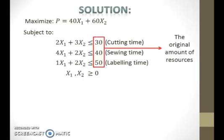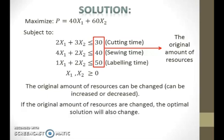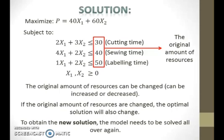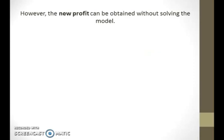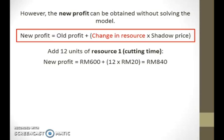Note that the right-hand side values in the model represent the original amount of resources. These values can be changed — that is, they can be increased or decreased. If these values are changed, the optimal solution will also change. To obtain the new optimal solution, the model needs to be solved all over again. However, the new profit can be obtained without solving the model. For example, by using the formula, if 12 units of resource 1 are added to the model, the new profit becomes 840 ringgit. And if 8 units of resource 3 are reduced from the model, the profit remains the same.